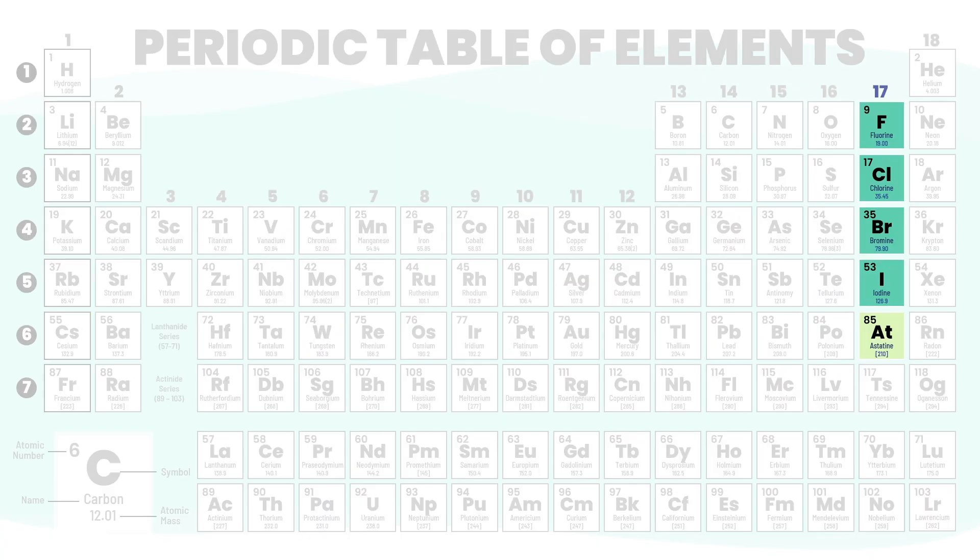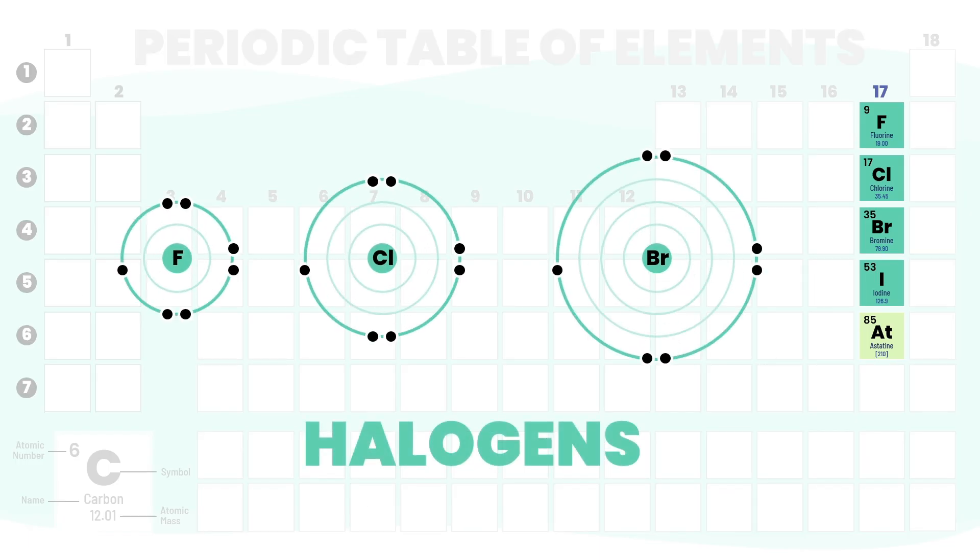Now let's jump to group 17, the halogens - elements like fluorine, chlorine, and bromine. They all have seven valence electrons. They are just one electron short of a full outer shell. They don't want to lose electrons like group 1. They want to gain one, just one. That single empty spot makes them highly reactive too, but for the opposite reason.